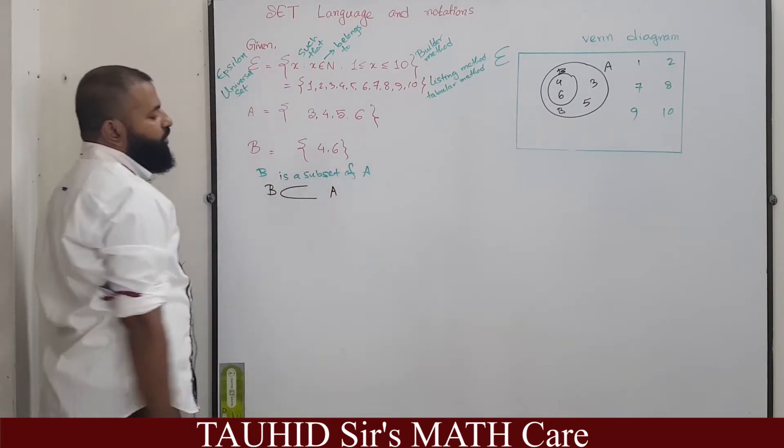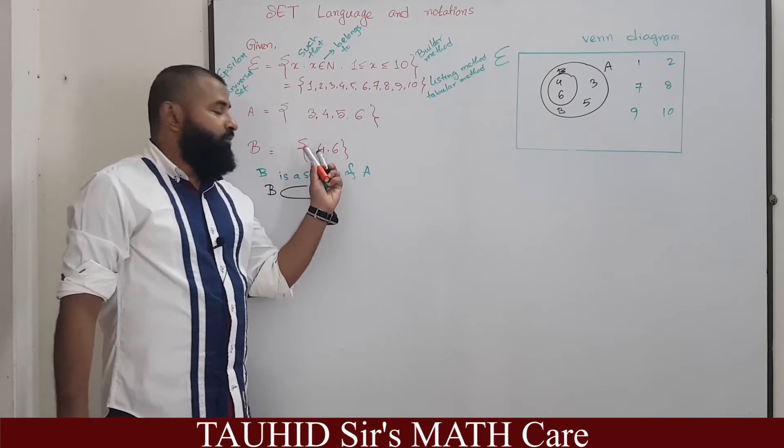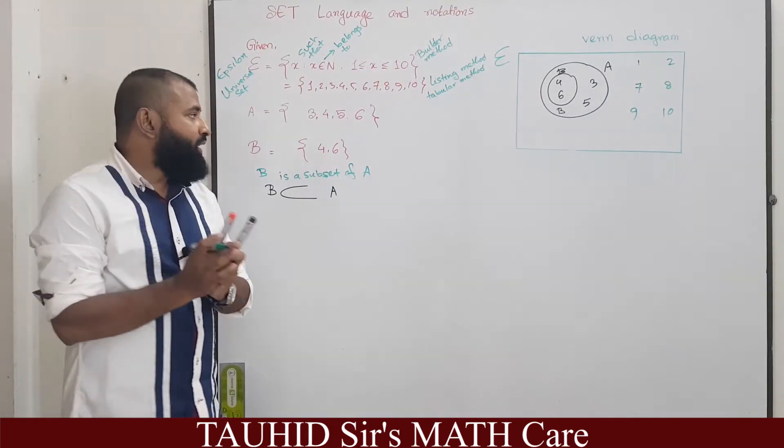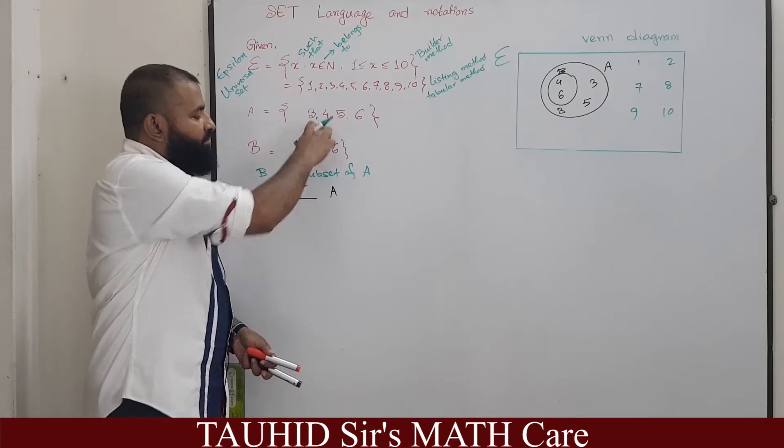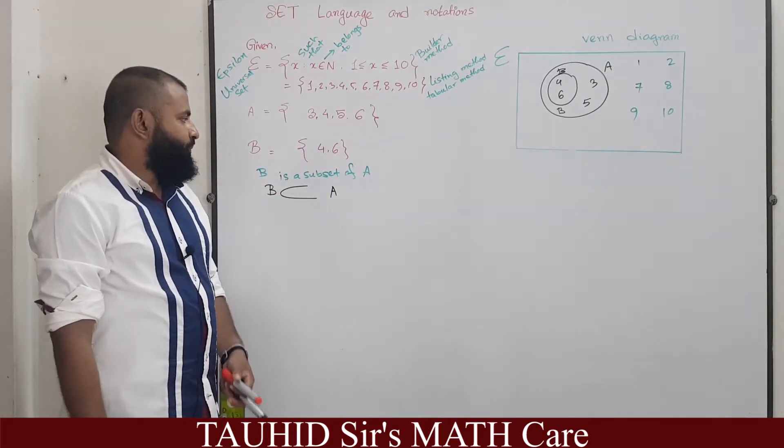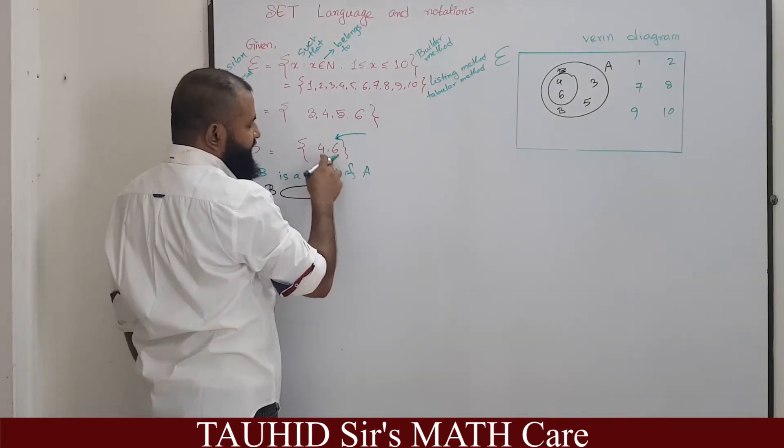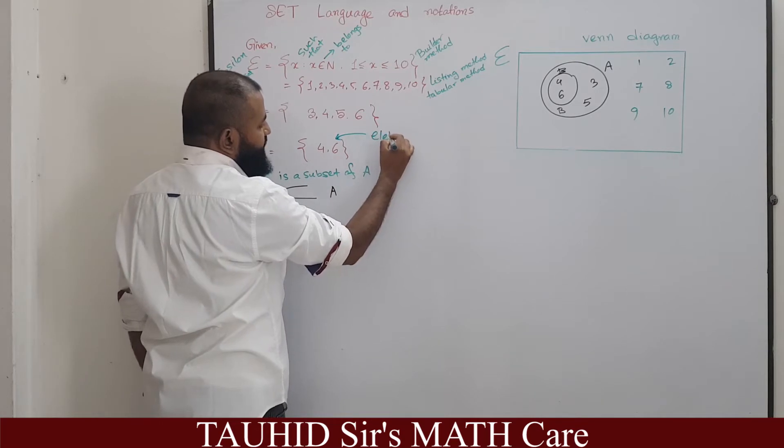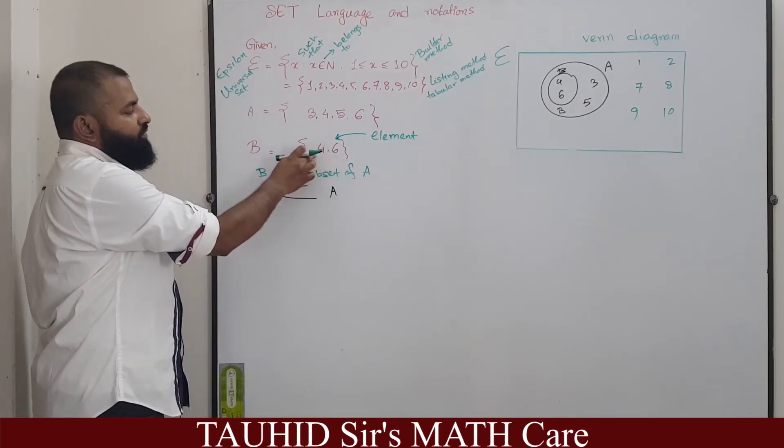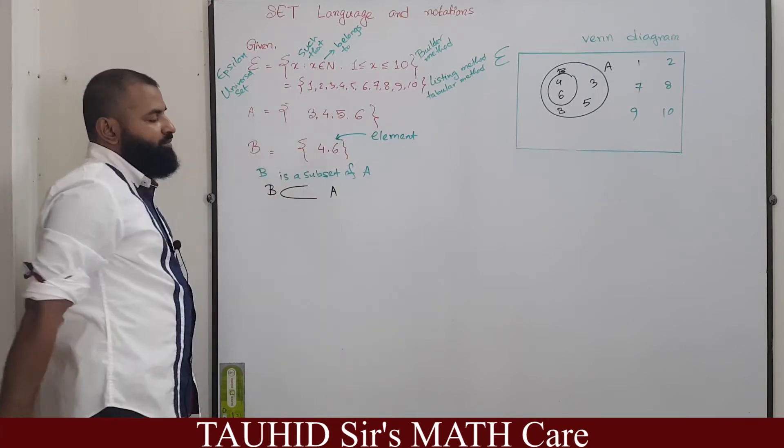Is a subset of A, that means the members of the set B all are present as the members of set A. Each member of any set is called an element. 6 is an element, 4 is an element, 3 is an element, 5 is an element.